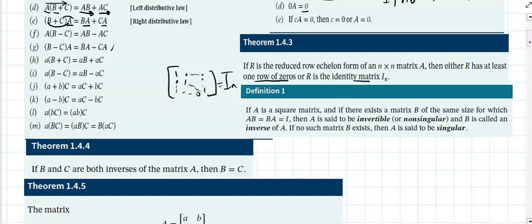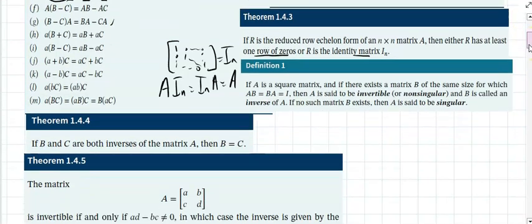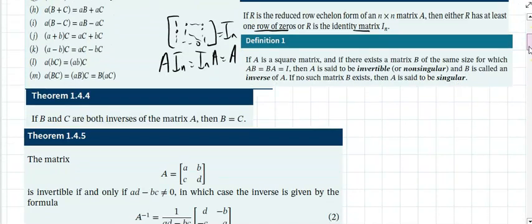What's special about the identity matrix? If you take any matrix and multiply it by the identity on either end, you get the original matrix back. So the identity matrix plays the role of the number one in real number multiplication.